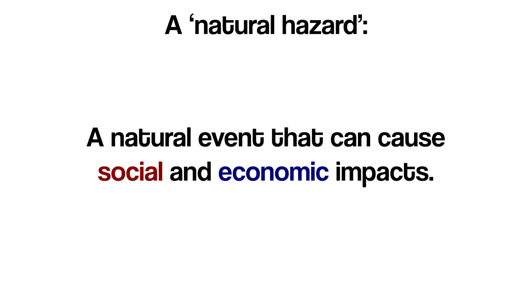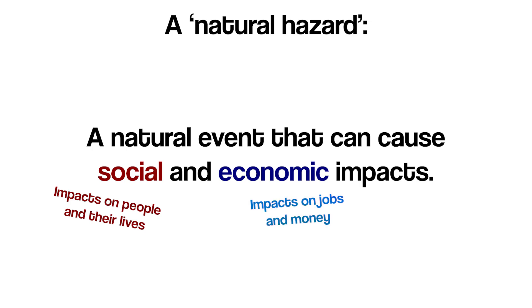A natural hazard is a natural event that can cause social and economic impacts. In geography, social means impacts on people and their lives — so mainly we're talking about injuries and deaths. Economic refers to any effects the event has on jobs and money, and this often refers to the cost of the damage a hazard has done or the jobs that people lose.